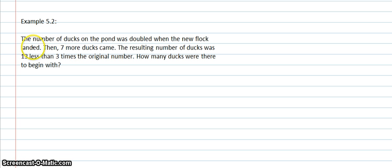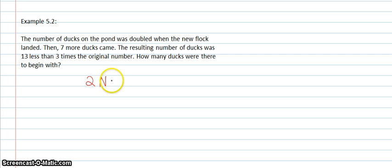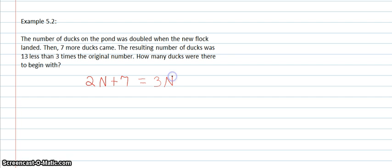The first part: the number of ducks on the pond was doubled when the new flock landed, so we write 2n, where n represents the beginning number of ducks. Then 7 more ducks came, so we add 7. The resulting number equals — that's our equal sign — 3 times the original number, which is 3n, and it's 13 less, so we subtract 13 from that.